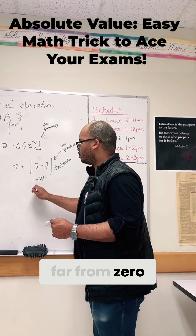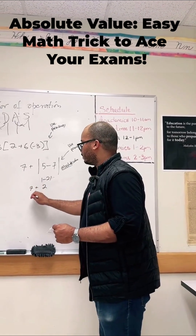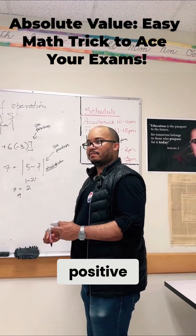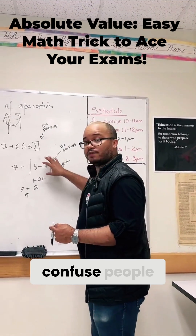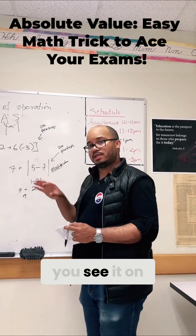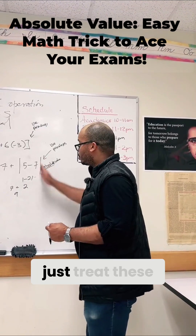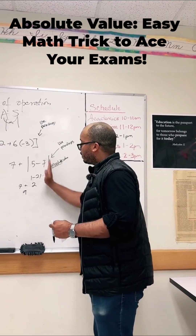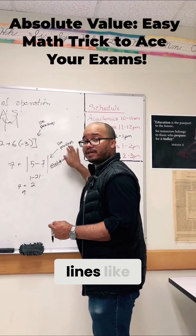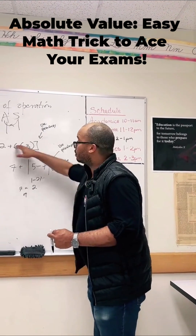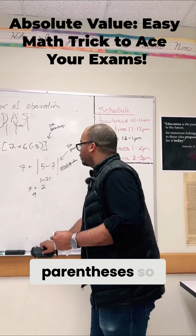Absolute value just means how far from zero. Negative two is two away from zero. And absolute value is always positive. If you see it on a Regents exam, just treat these absolute value lines like a parenthesis or bracket.